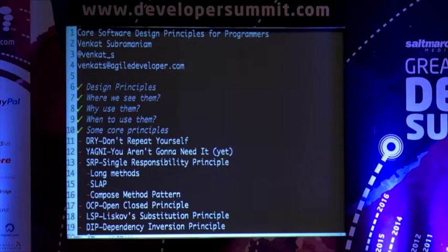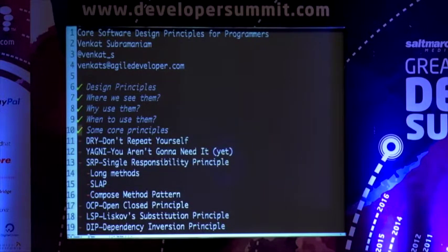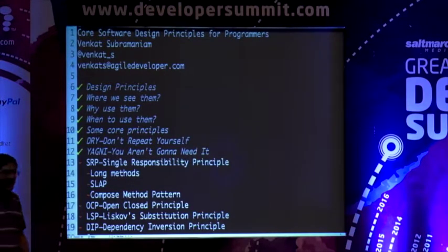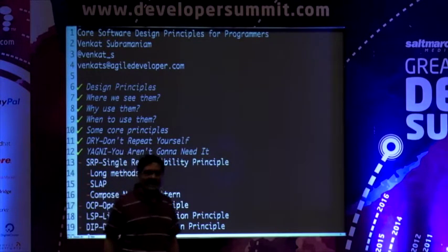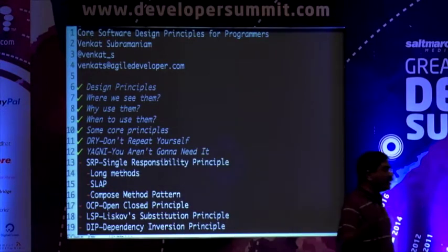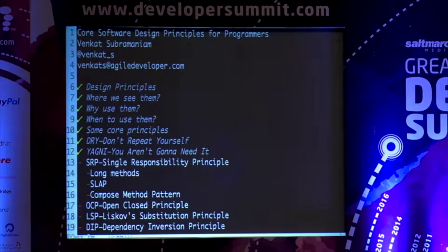The next principle is a bit controversial but really important — it's called the YAGNI principle. YAGNI stands for 'You Aren't Going to Need It.' How many times do developers write code they don't actually need? We end up with bloated software that does everything except what's really required.